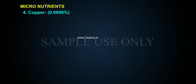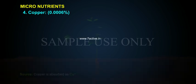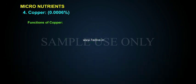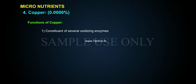Copper makes up 0.0006% and is absorbed as Cu2+. Functions of copper: it is a constituent of several oxidizing enzymes and a constituent of plastocyanin.